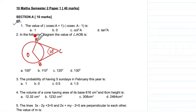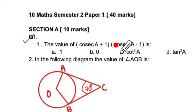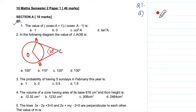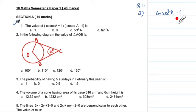Question 1, part A: the value of this expression. When you look at the pattern, it is like (a + b)(a - b), which gives us cosec²a - 1. We know from identities that this equals cot²a. So the first answer is C — cot²a.